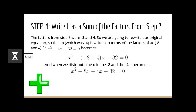Step 4 of factoring is to write b as a sum of the factors from step 3. The factors that added up to negative 4 were negative 8 and 4. Therefore, we will replace negative 4x with negative 8x plus 4x. So our new equation is x squared minus 8x plus 4x minus 32 equals zero.